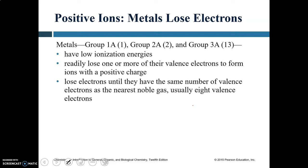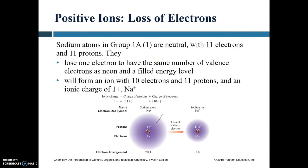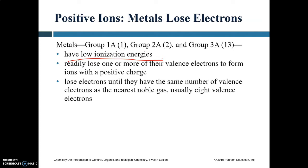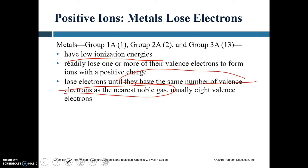Positive ions: metals lose electrons. Metals of groups 1A, 2A, and 3A — the representative elements — lose electrons. Alkali metals in group 1A lose one electron, alkaline earth metals lose two electrons, and metals in group 3A lose three electrons. They lose electrons because they have low ionization energies. When they lose electrons, the outer shell is stripped and the next shell becomes the outer one, giving them the noble gas configuration — usually eight valence electrons.